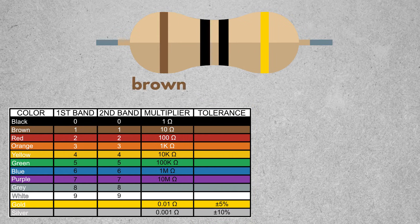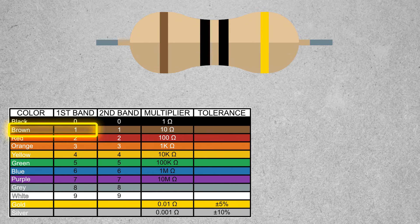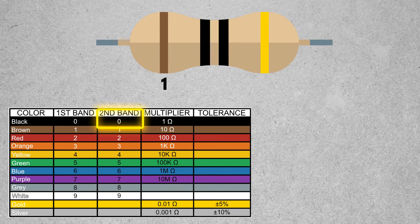In our first example we have the colors brown, black, black, and gold. The first number, brown, tells us that the first digit of our resistor is a value of 1. The second color is black, and it gives us a value of 0.